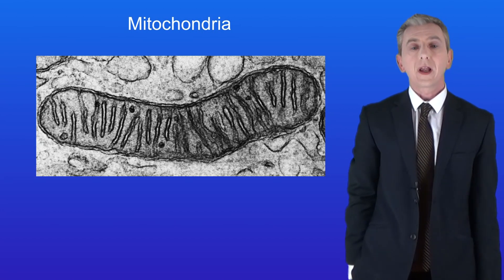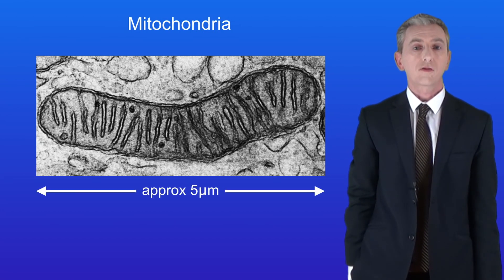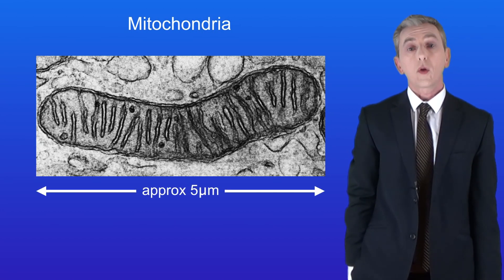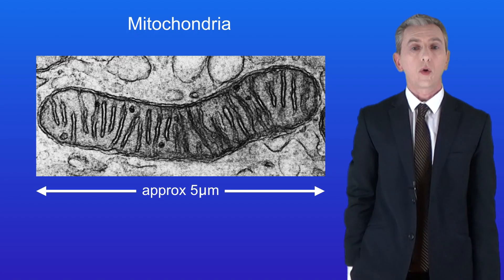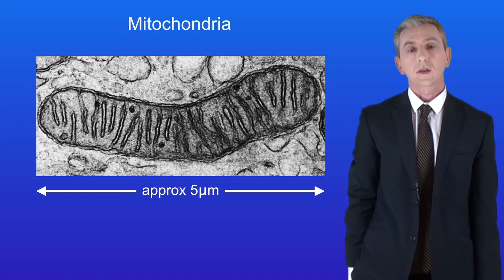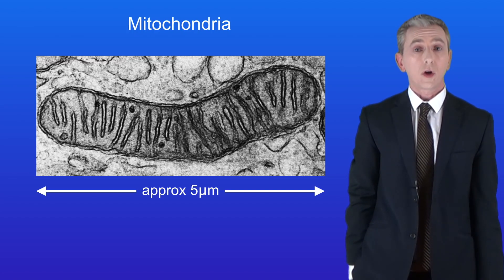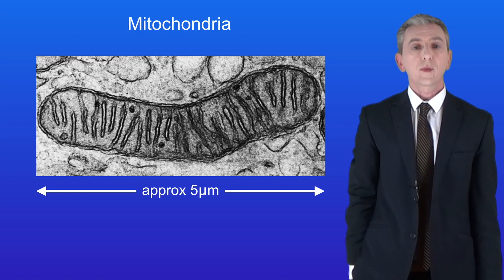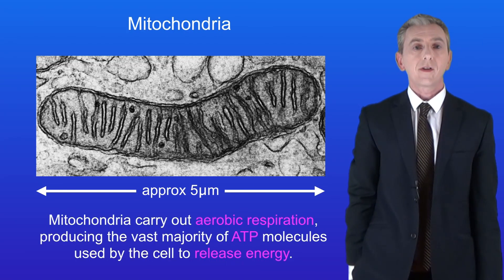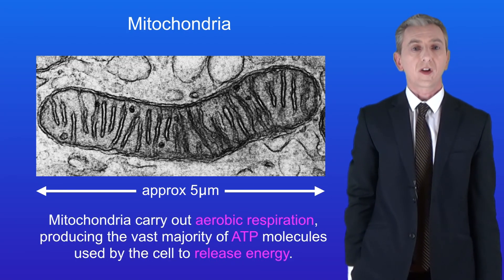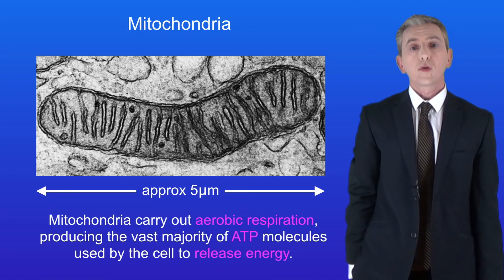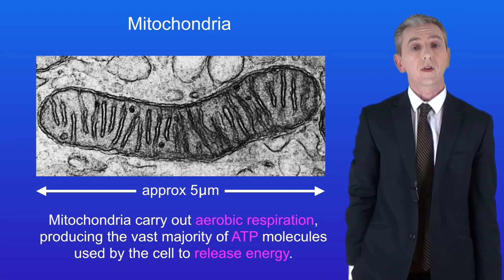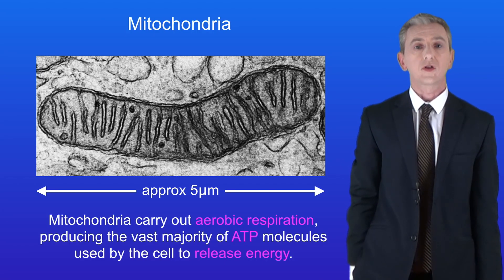The average length of mitochondria is around 5 micrometers, although they can be smaller or larger than that. Mitochondria can be rod-shaped like this one, but they can also be more spherical. Mitochondria carry out aerobic respiration, producing the vast majority of ATP molecules used by the cell to release energy.